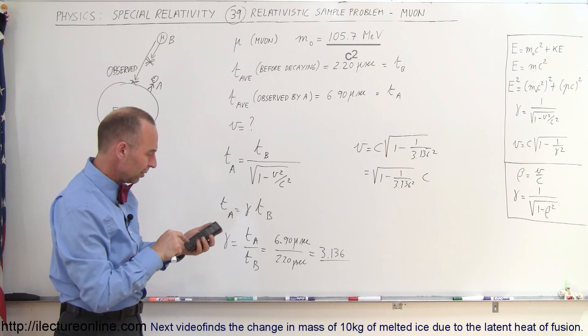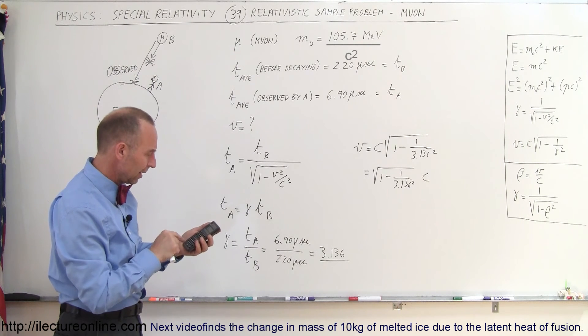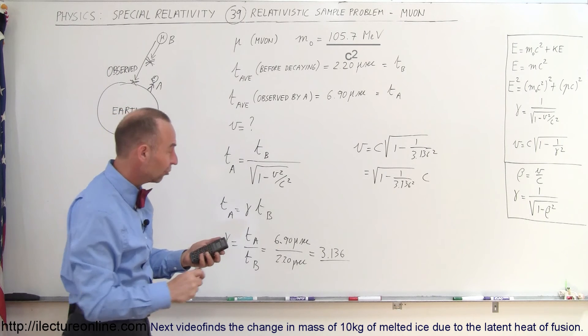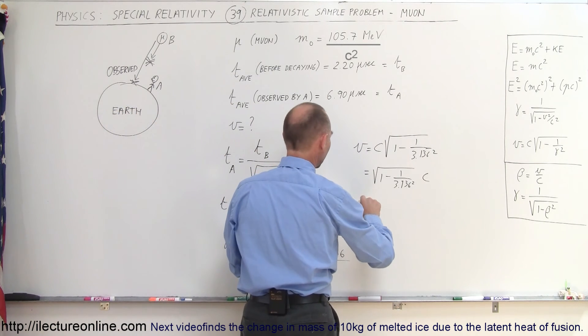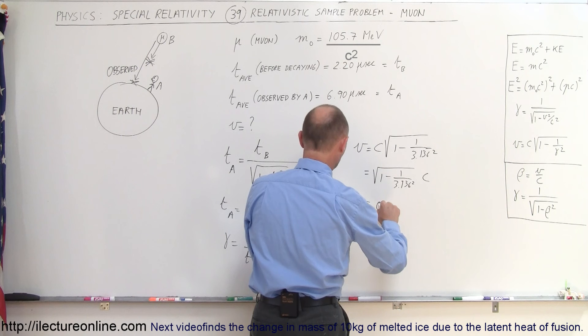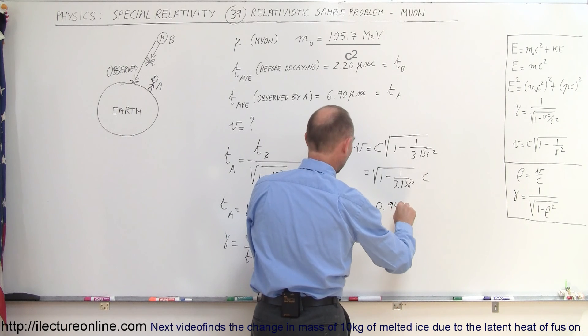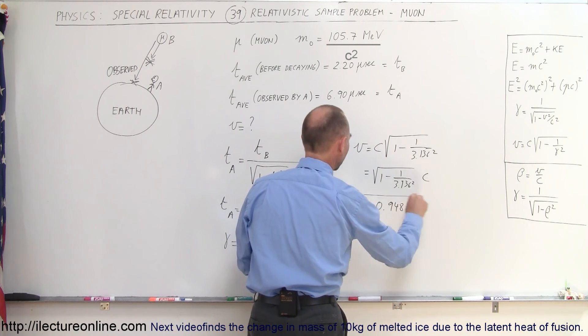So, let's square that number. Take the inverse of that number, subtract that from 1, and then take the square root. And that shows us that the velocity of those muons as they come into the atmosphere is equal to 0.948 times the speed of light.